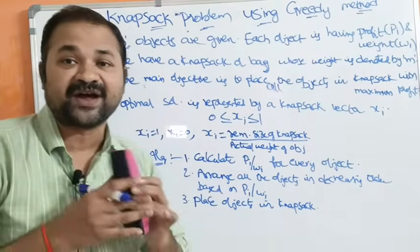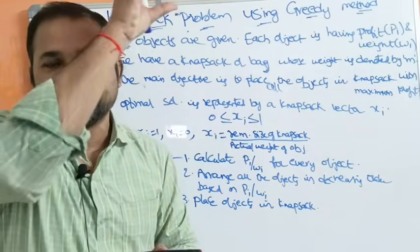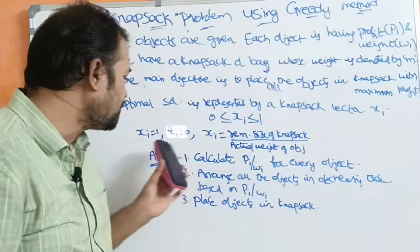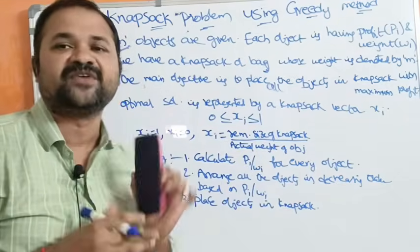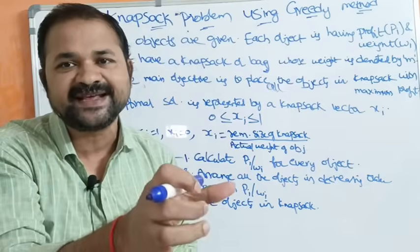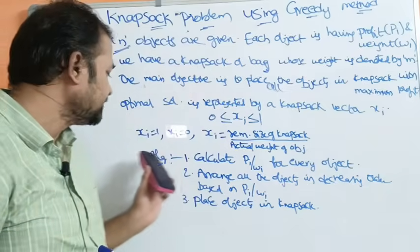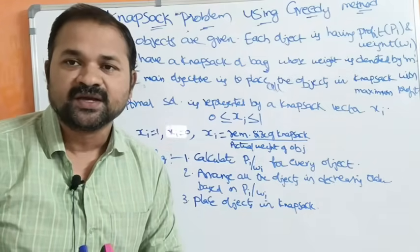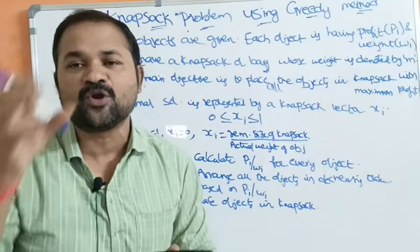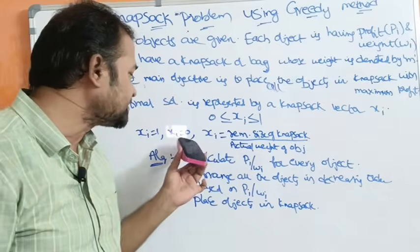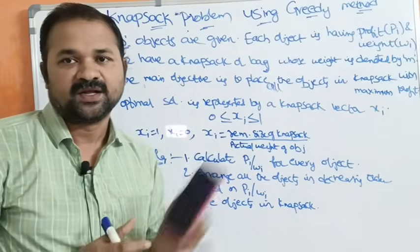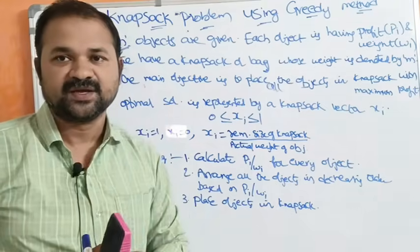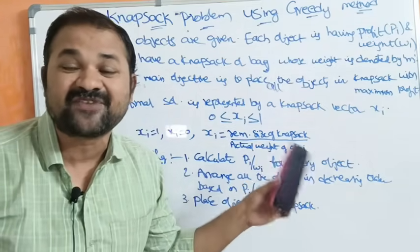If xi equals 1, that means the object is fully placed in the Knapsack. If an object is placed into the Knapsack then xi is 1. If an object cannot be placed into the Knapsack then xi is 0. Otherwise, xi takes a fractional value.